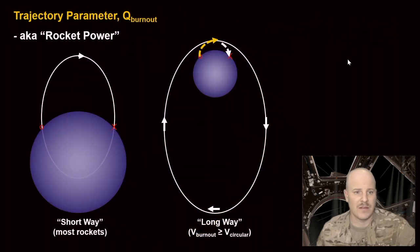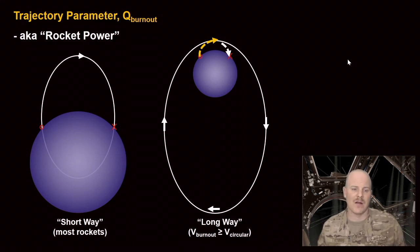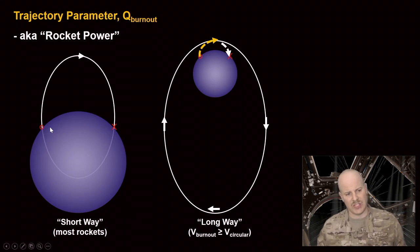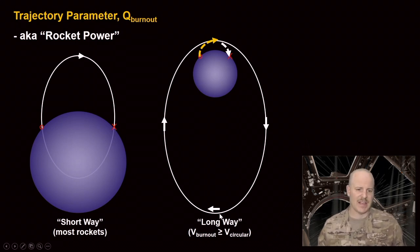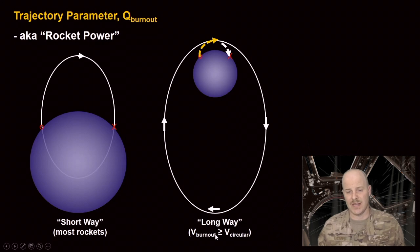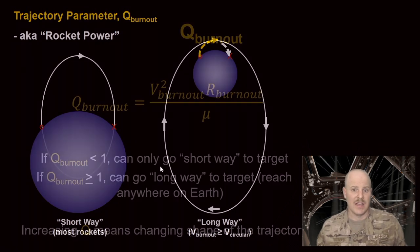The next geometric quantity is the trajectory parameter — a non-dimensional quantity we call Q, which represents rocket power. Most rockets have a Q less than one, meaning they can only go the short way to their target. They basically have an elliptical trajectory that impacts the earth at two points: at the launch site and at the target. If Q is greater than one, our rocket has a V burnout greater than V circular, meaning it can achieve orbit and hit any location on the surface of the earth. A higher Q number gives us more flexibility in what targets we can hit.